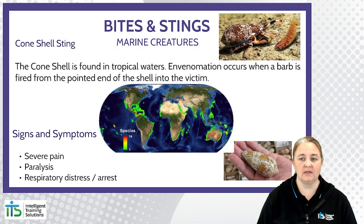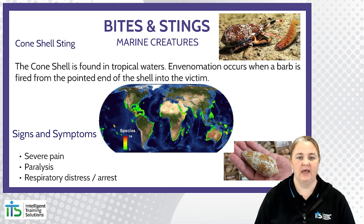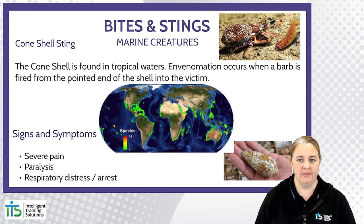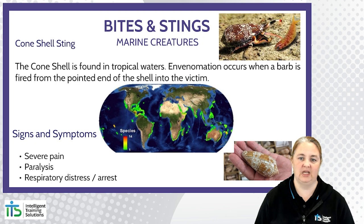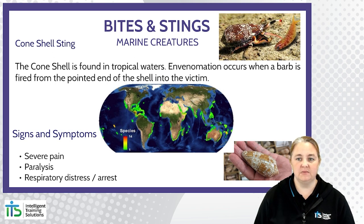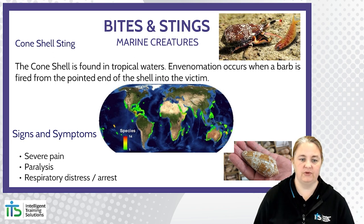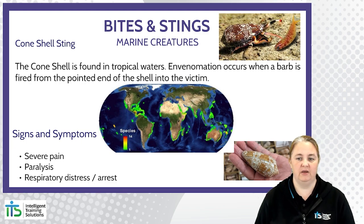The cone shell is another marine creature treated with the pressure immobilisation technique. Found in tropical waters, envenomation occurs when a barb is fired from the pointed end of the shell into the casualty. The symptoms of a sting can include severe pain, paralysis, respiratory distress and respiratory arrest.